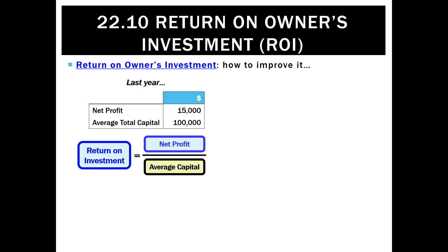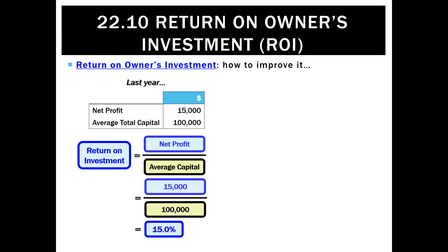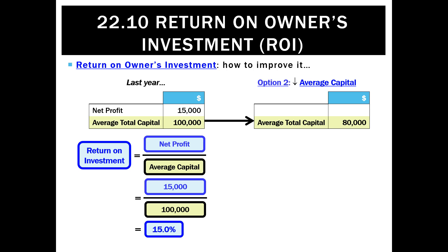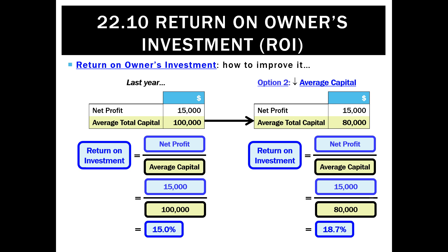The other way to improve ROI is if we can't earn a higher net profit, we can take out unproductive capital. Maybe there's some capital in the business that isn't actually productive — old inventory we can't sell, taken out as drawings, or an old car that doesn't run anymore that the owner can remove from the balance sheet. That becomes drawings, which decreases our capital. If net profit stays the same but average capital goes down to 80,000, our ROI increases to 18.7%.